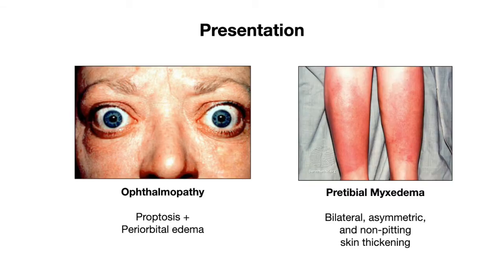Now let's discuss Graves' ophthalmopathy, which as we discussed earlier in the video, is highly characteristic of Graves' disease as it is found in virtually no other form of hyperthyroidism. This is where you get proptosis or bulging of the eyes, as well as periorbital edema, so there is some swelling surrounding the eye as well. It's important to distinguish this ophthalmopathy from lid lag, which is found in other forms of hyperthyroidism, where the upper eyelid remains higher than normal when the eyes are looking downward. This is a result of increased sympathetic activity, which leads to tightness of the levator palpebrae, the muscle of the eyelid responsible for opening it.